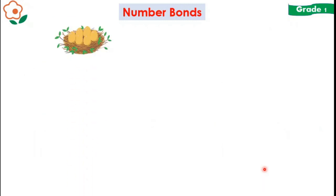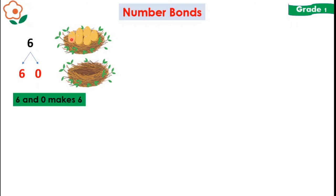So here is a nest and you can see some eggs in the nest. There are 6 eggs in the nest and in the other nest you can see there are no eggs. So how can we break number 6? We can break it as 6 and 0 because there are 6 eggs in the first nest and in the second nest there are no eggs. So 6 and 0 also makes 6, or 6 can break into 6 and 0.